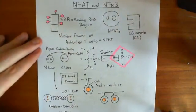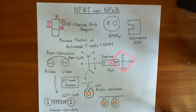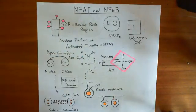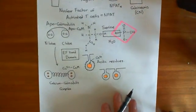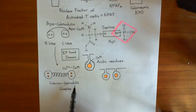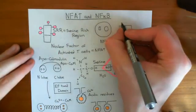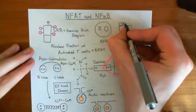We are discussing the activation of the nuclear factor of activated T-cells. If calcium goes up in the cytoplasm of a cell, calcium is going to bind to the four calcium-binding sites of calmodulin to create a calcium-calmodulin complex. The calcium-calmodulin complex is then capable of binding to the calcineurin enzyme.